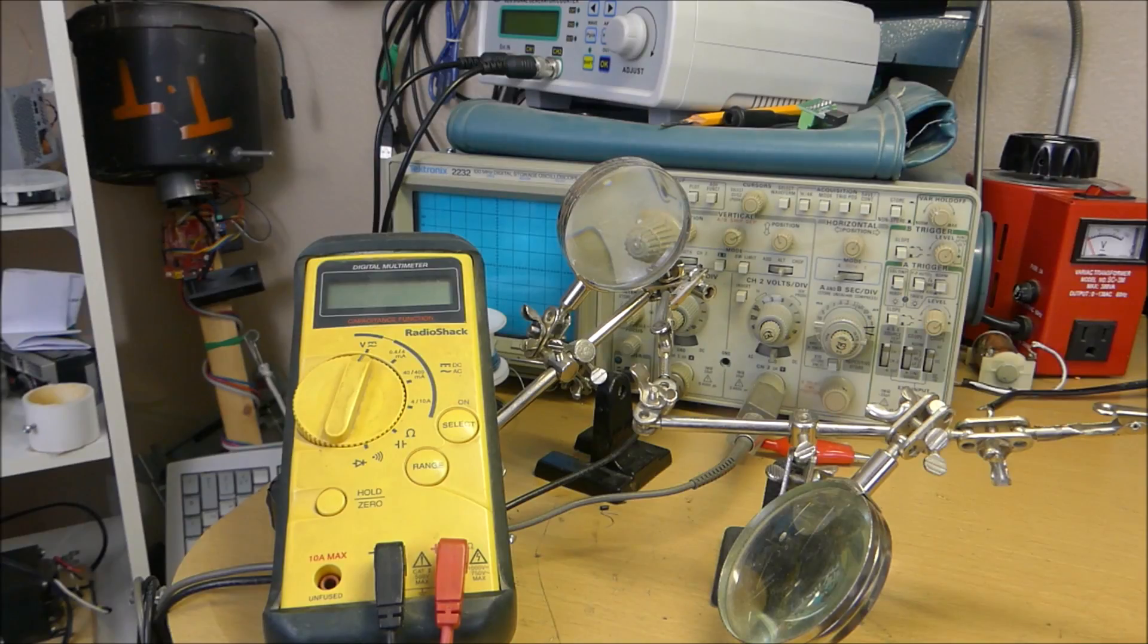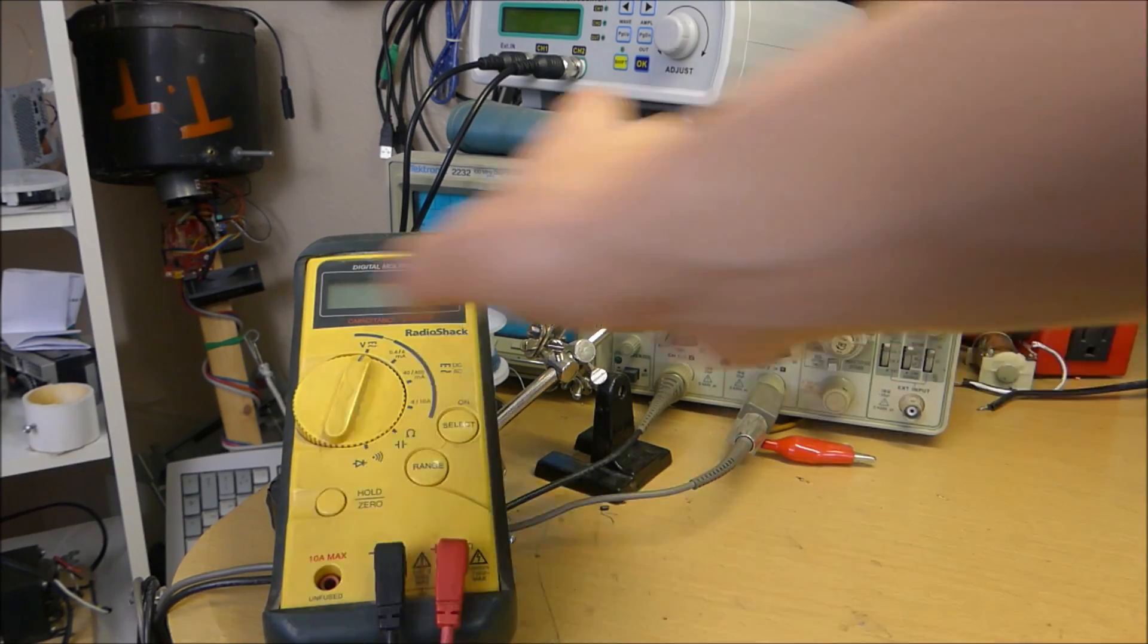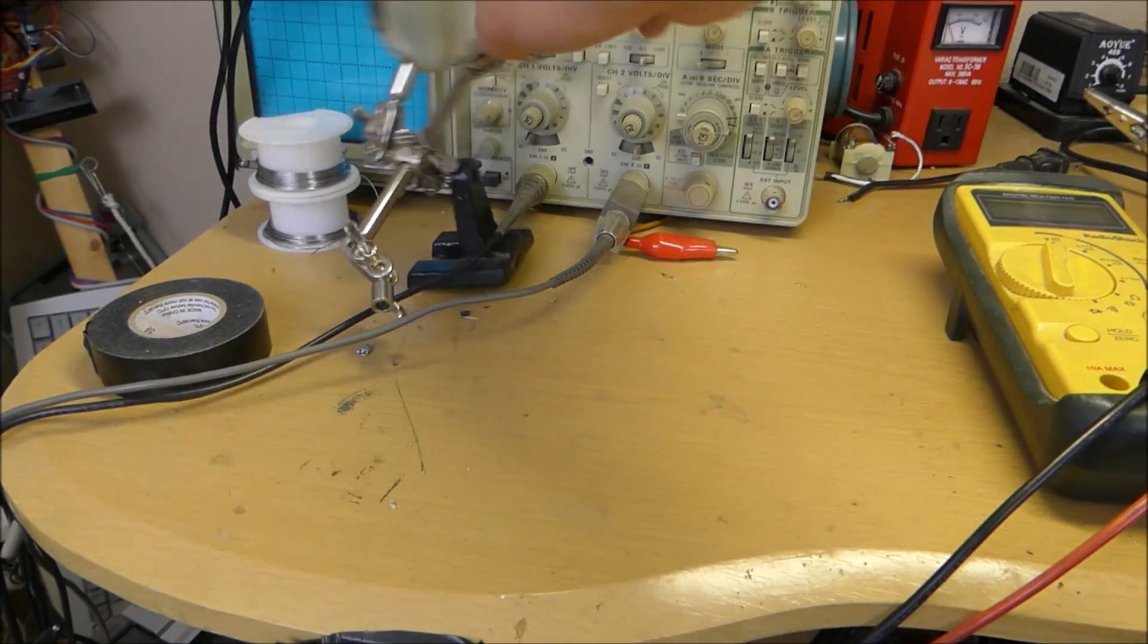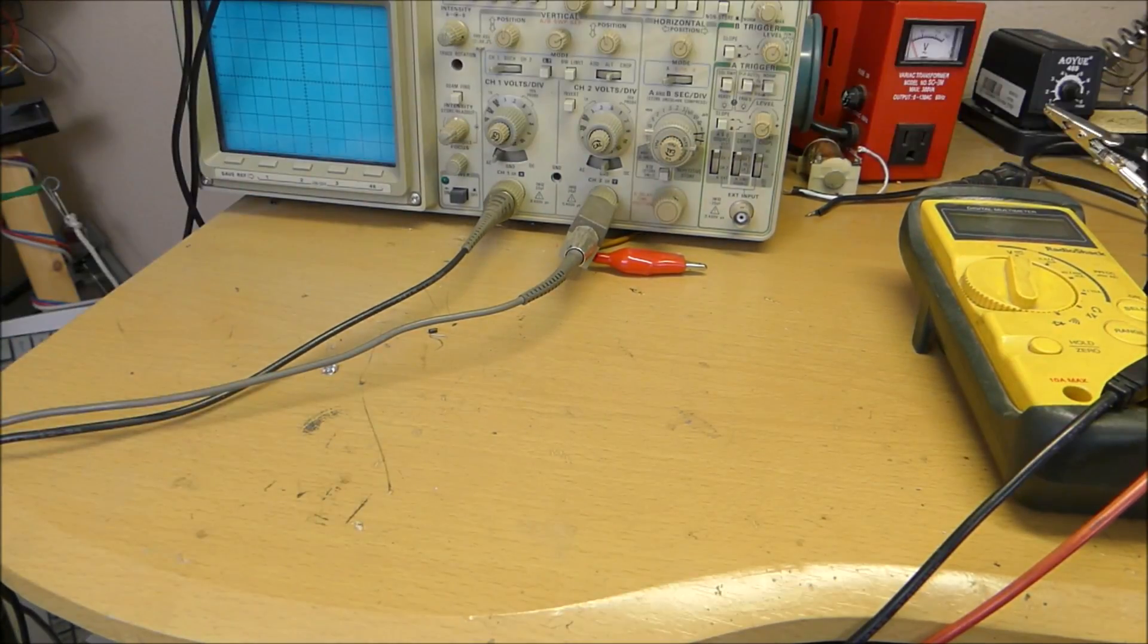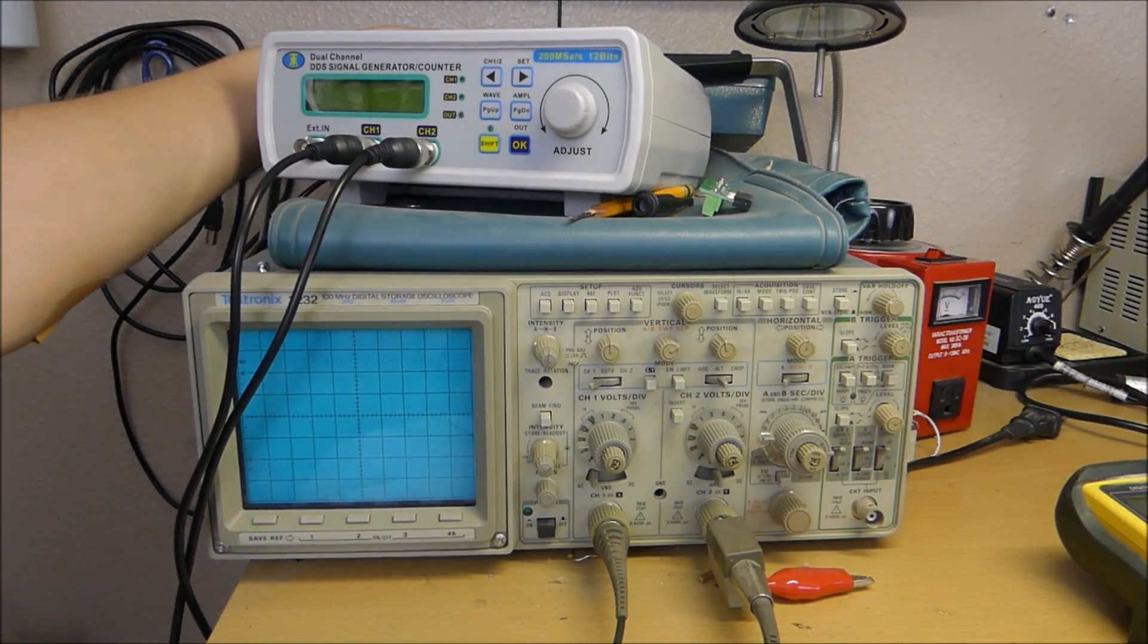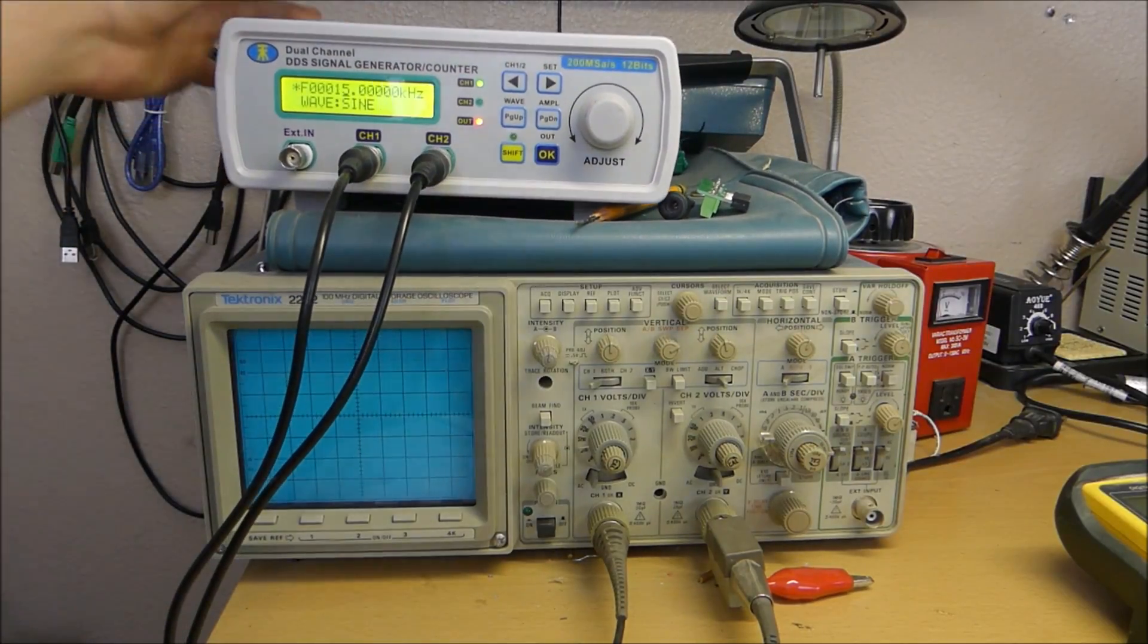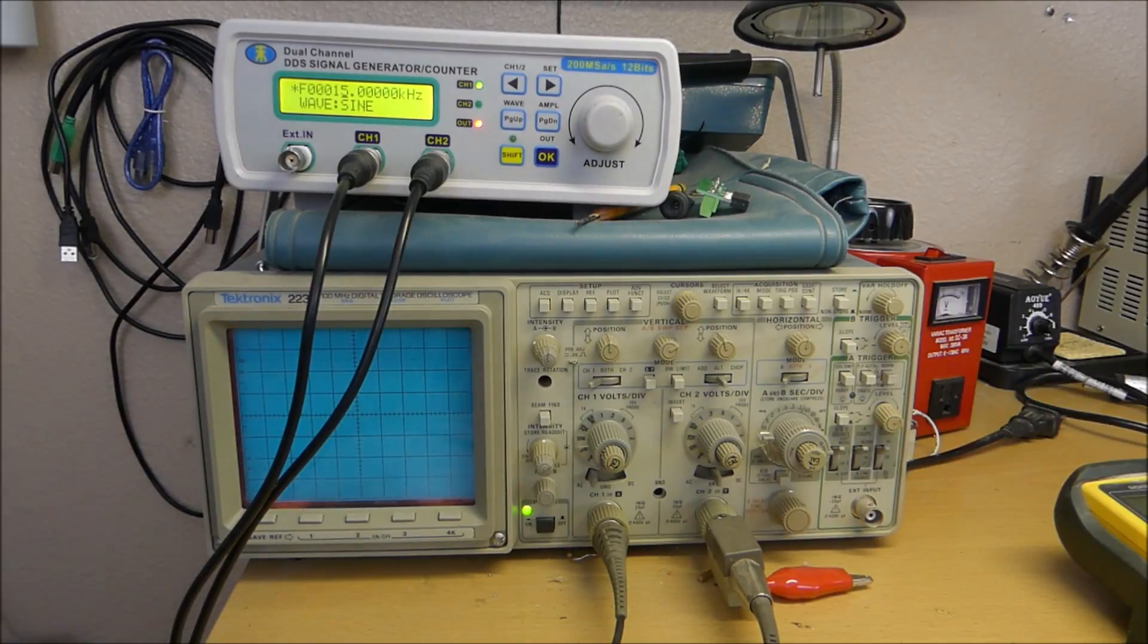So without further ado, let's get started with this video. For this project you're going to need an oscilloscope and a function generator, and a clear space to work with. You've got to clear out some of the junk covering your oscilloscope, like solder, electrical tape, and helping hands. Then fire up your oscilloscope and your function generator.